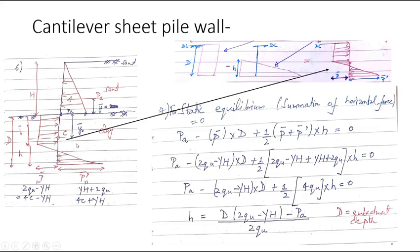For static equilibrium, the summation of horizontal forces equals zero. The three forces are: PA (active force), P_bar (resultant pressure over embedment depth D, rectangular distribution), and P_bar_dash (triangular, half P_bar_dash × D at 1/3 height). P_bar = 2Qu − γH and P_bar_dash = γH + 2Qu. However, the embedment depth D is unknown and appears as a function in these expressions, so we proceed to calculate it.